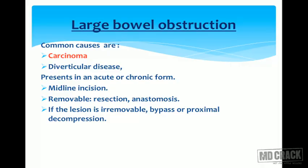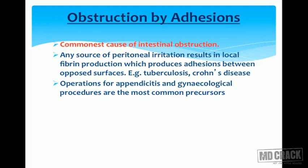Large bowel obstruction — the common causes are carcinoma or diverticular disease. It can present in an acute or chronic form. A midline incision should be done. If the lesion is removable, resection and anastomosis is done. If the lesion is irremovable, bypass or proximal decompression is done.